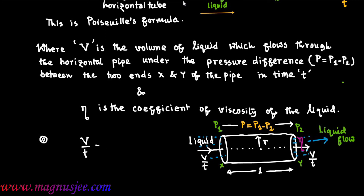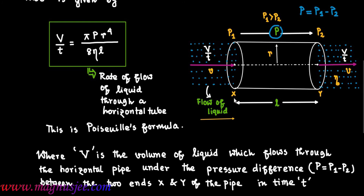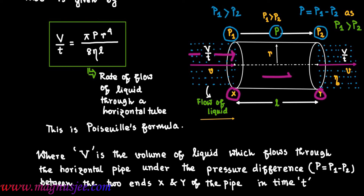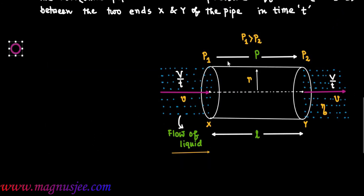According to Poiseuille's formula, with eta as the coefficient of viscosity of the liquid, the rate of flow V by T equals pi P r to the power 4 divided by 8 eta L. P1 and P2 are the pressures at ends x and y, with P1 greater than P2, so liquid flows with rate V by T through the tube x y towards the right and flows away from the tube with the same rate V by T.